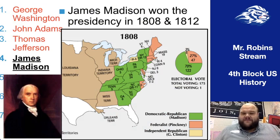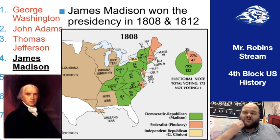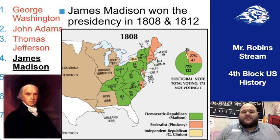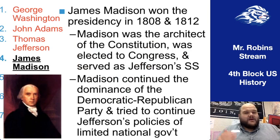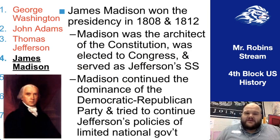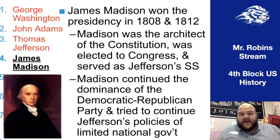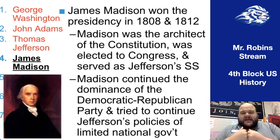Jefferson will leave office in 1808-1809, following the two-term precedent set by George Washington. The man he handpicks as his successor is his right-hand man, James Madison. Madison wins election in both 1808 and 1812 over the Federalist candidates. Madison is someone we've already talked about — he was the architect and father of the Constitution, had served in Congress under Washington and Adams, and under Jefferson served as Secretary of State. He and Jefferson were really close; both were from Virginia with similar backgrounds.